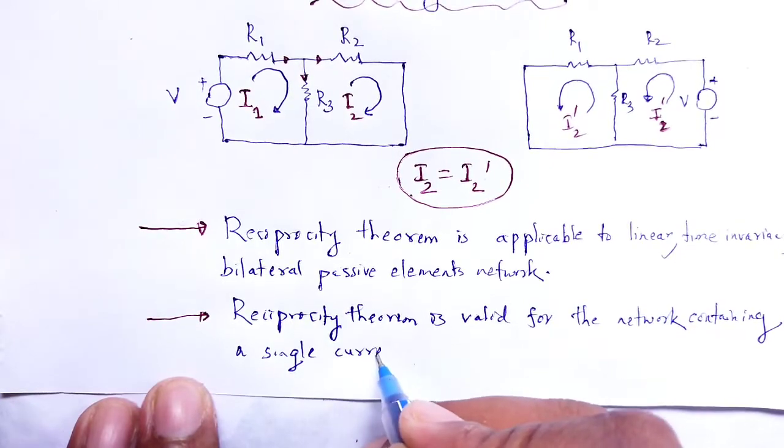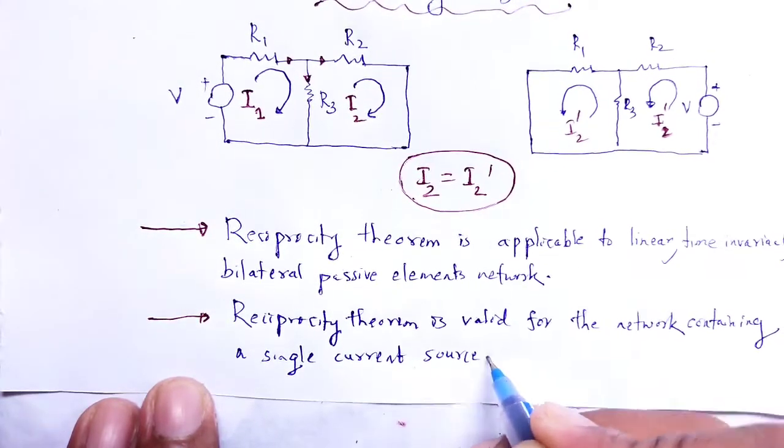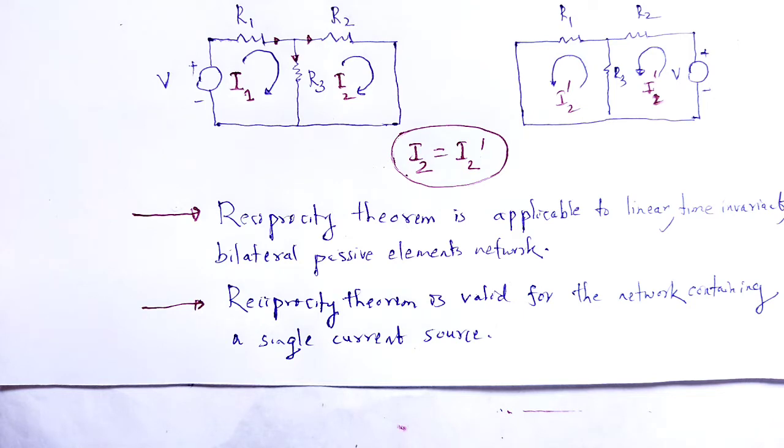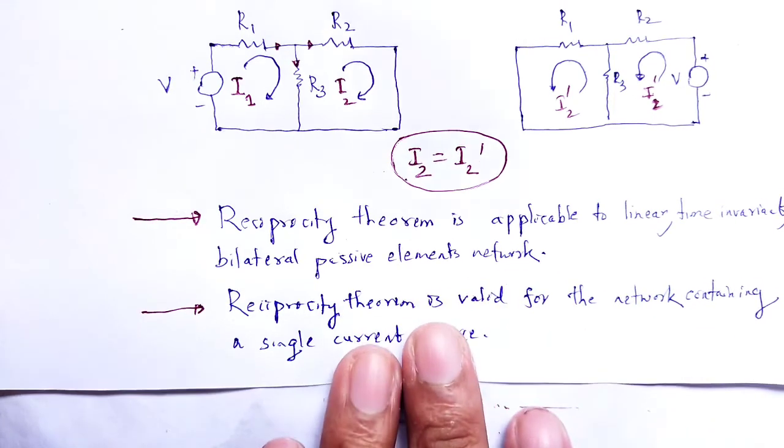And some limitations of reciprocity theorem, that it is not applicable to multisource networks, and it is not applicable to the networks consisting of time-varying elements. If present in that electrical circuit, then we cannot apply the reciprocity theorem, and also it is not applicable to the circuits having both dependent and independent sources. So, these are some limitations of reciprocity theorem.